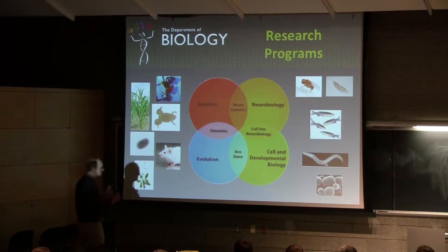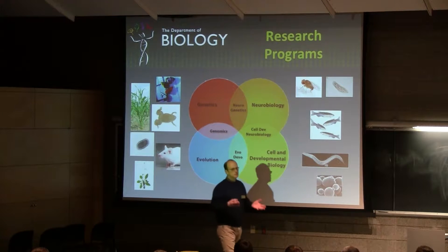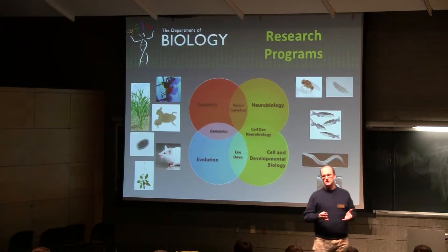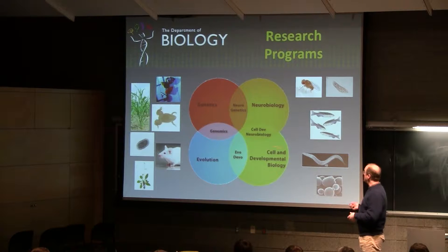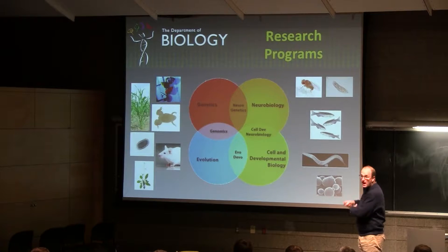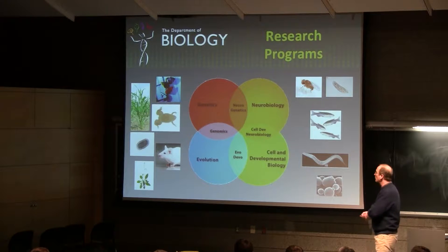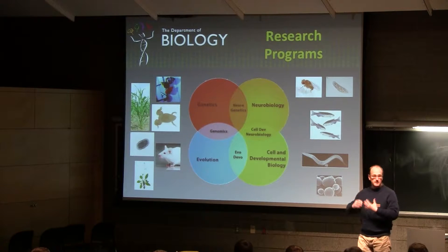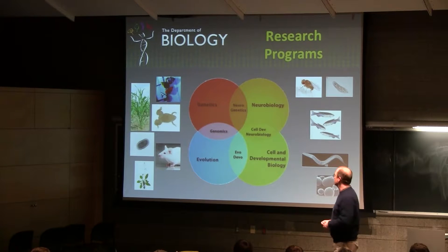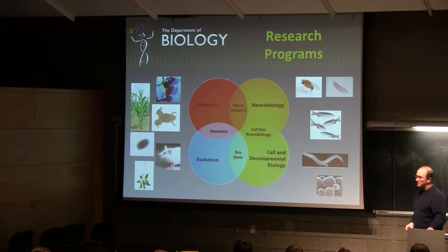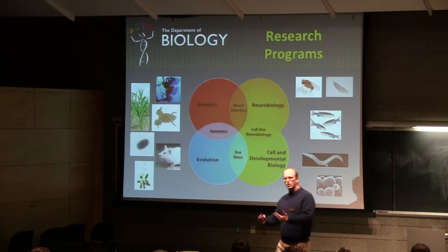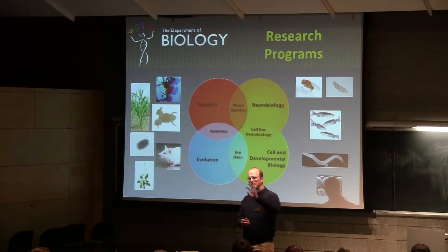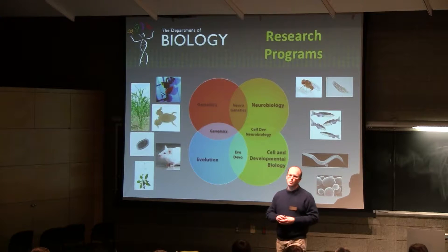Our department I would characterize as teaching students how to approach living systems scientifically so that we understand how they work at a genetic level, at a cellular and developmental level, and how systems work. We have a very strong emphasis in neural biology in terms of what our department does in its research programs, and then the evolutionary processes that dictate how these systems change from generation to generation, and how they've led to the biodiversity that we see on our planet now.